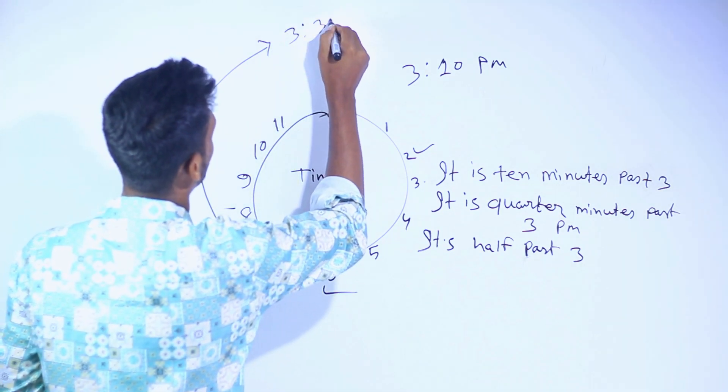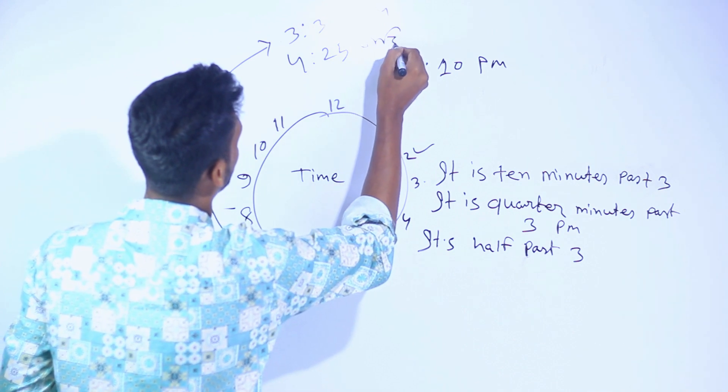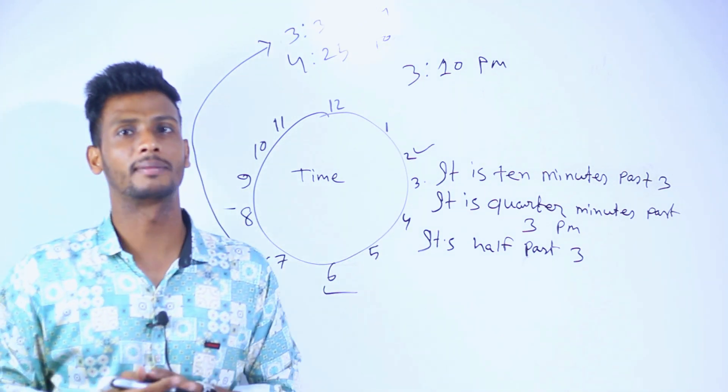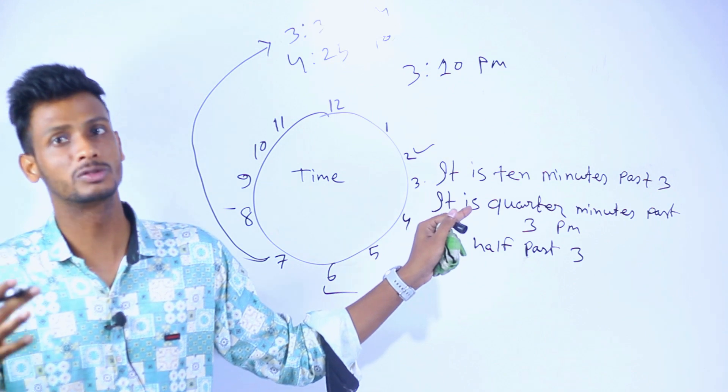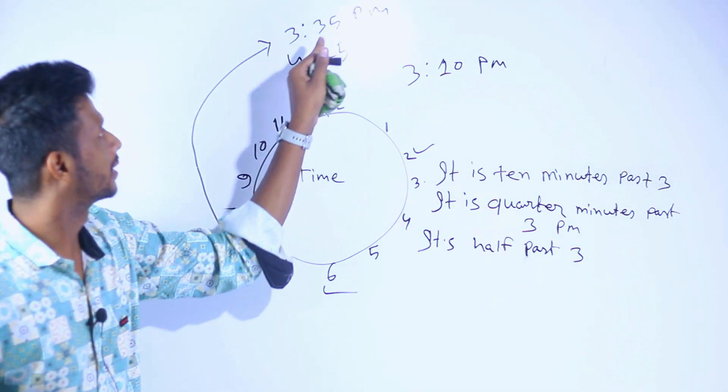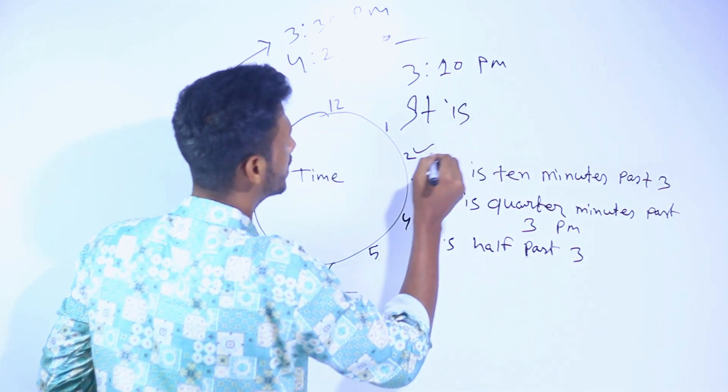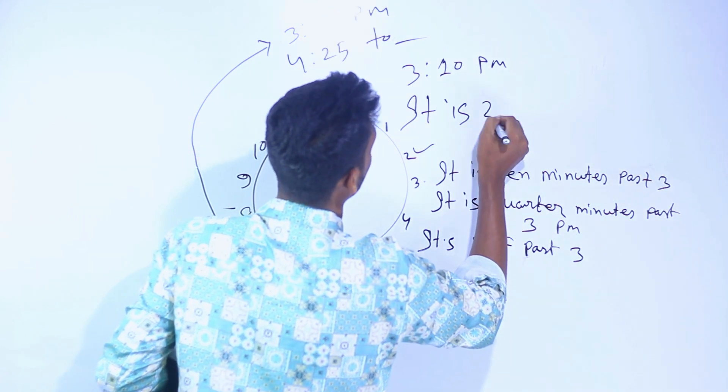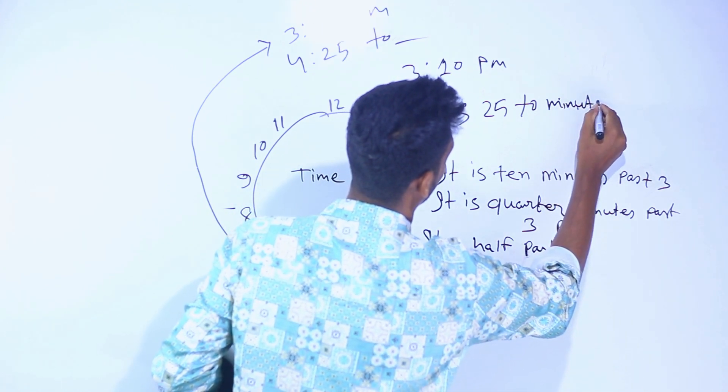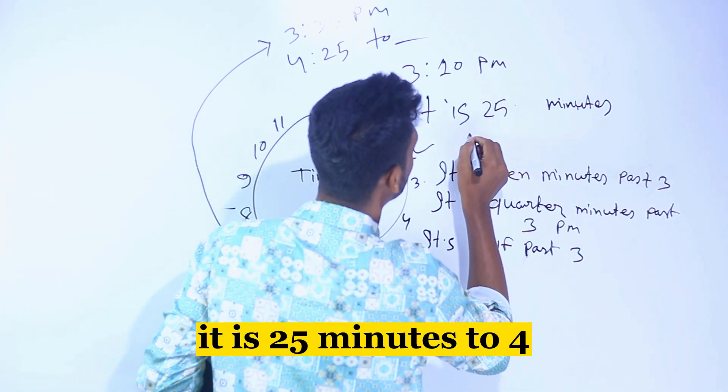Now, 3:35. That means 25 minutes come back. It is past 3, or 25 to 4. It is 25, sorry, 25 minutes to 4.